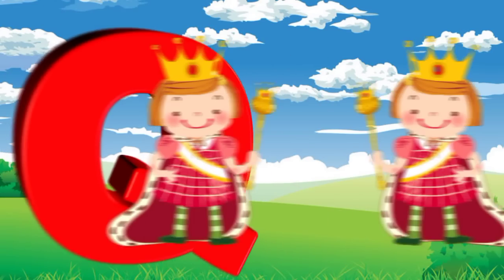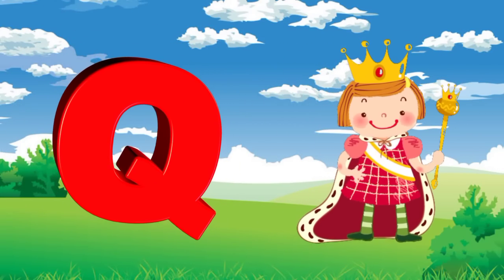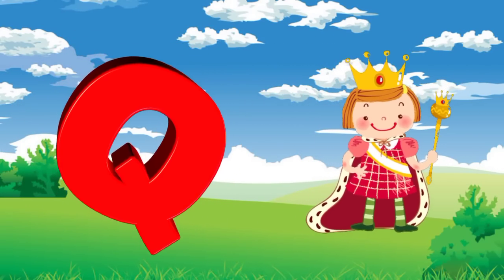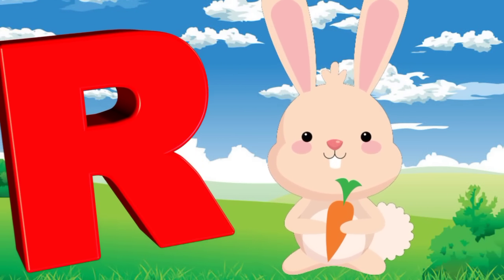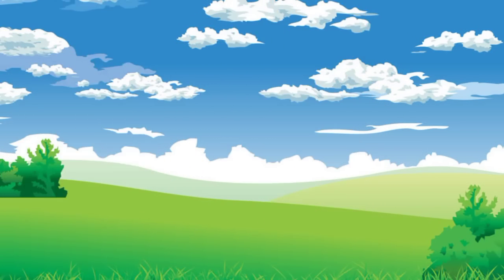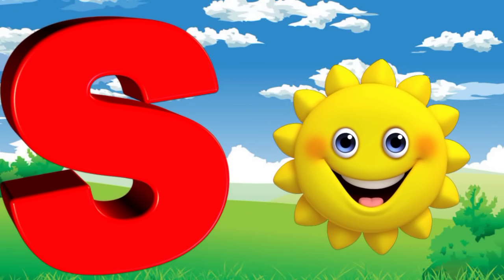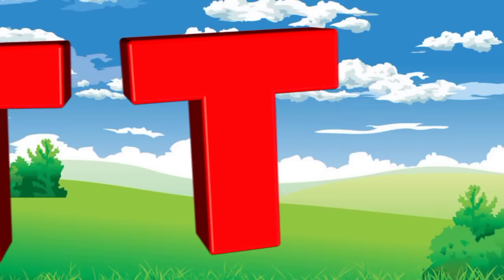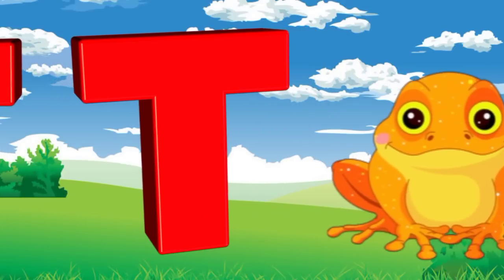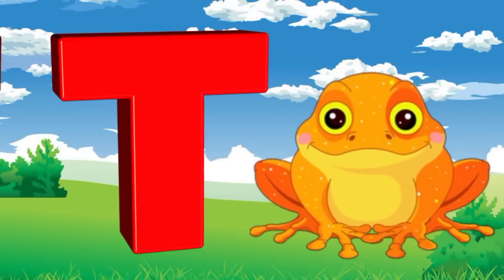Q is for queen, k-k-queen. R is for rabbit, r-r-rabbit. S is for sun, s-s-sun. T is for toad, t-t-toad.